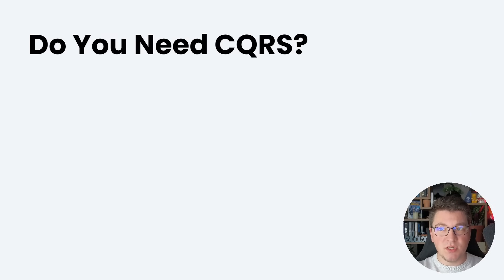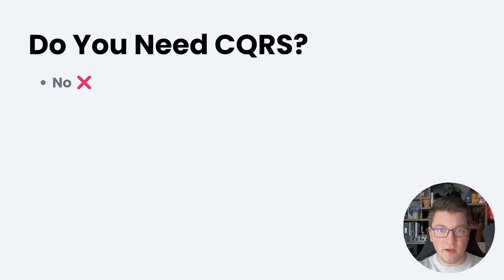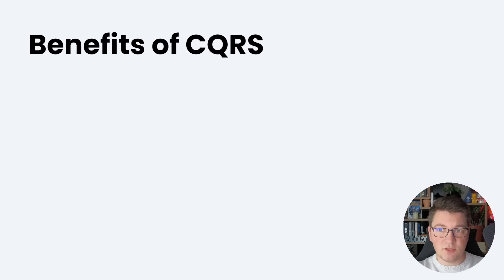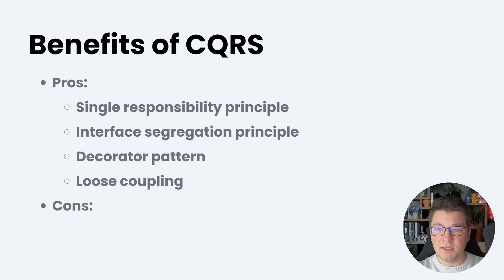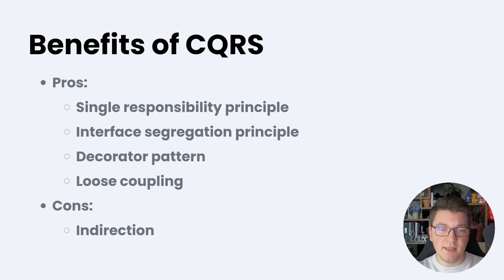I mentioned earlier that I like to use CQRS to implement my application layer use cases. Do you need to use CQRS? No — you absolutely do not need to use CQRS, and you can implement your application use cases just fine in simple service classes. But there are some benefits I enjoy. The pros of CQRS are the single responsibility principle — each command or query handler is responsible for only one use case — the interface segregation principle, the decorator pattern via mediator's pipeline behavior, and loose coupling. The one con when implementing with mediator is indirection: there's reflection magic connecting your command or query to the appropriate handler, so debugging isn't that straightforward.